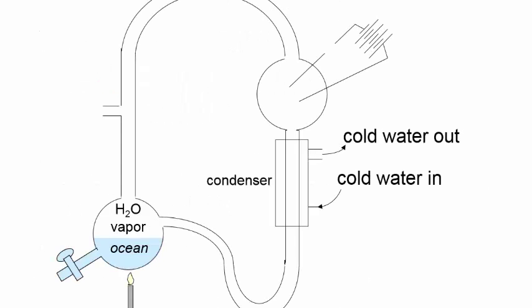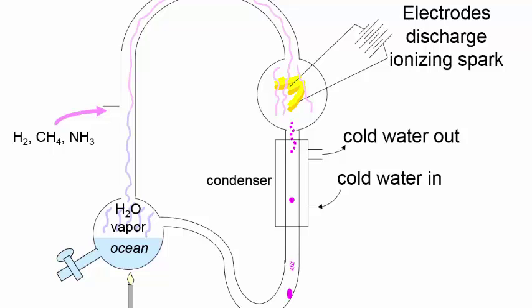In their famous experiment shown here, Stanley Miller and Harold Urey fed gases like ammonia, hydrogen, and methane into water vapor created by heating water in the ocean flask on the left. After the gases mix with the water vapor, they get an electrical shock — an electrical shock or some other ionizing radiation. When the vapor then condenses, the water in the ocean flask can now be shown to contain organic molecules.